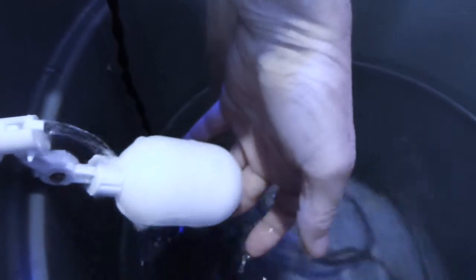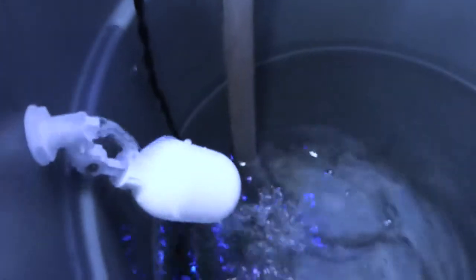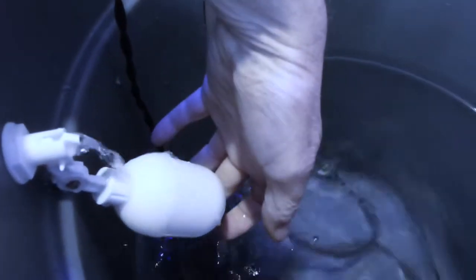Just a simple float valve. I bought it off Amazon. I think it was $10 or $12 for two of them. Obviously, my bucket is a Brute trash can. I think it's 33 gallons, 35 gallons, something like that.